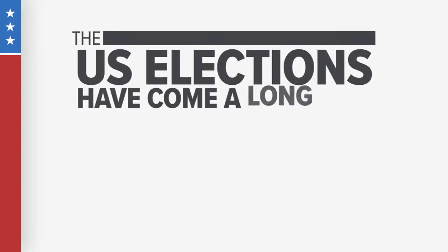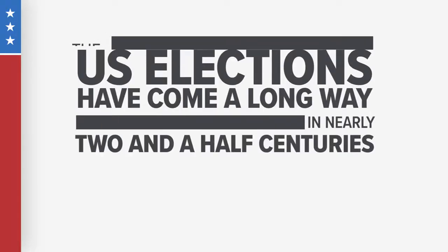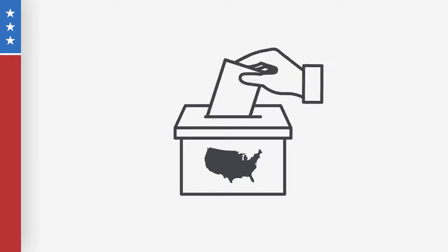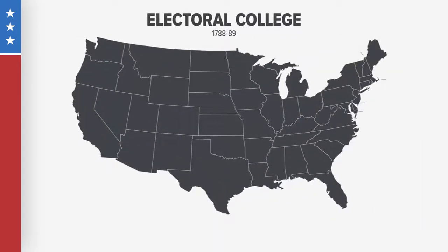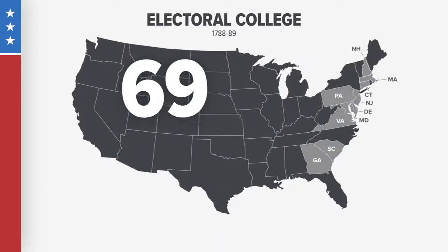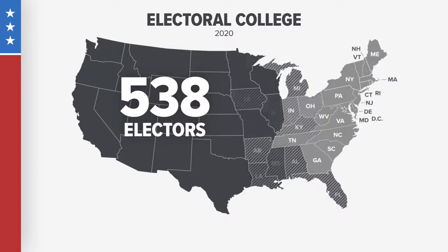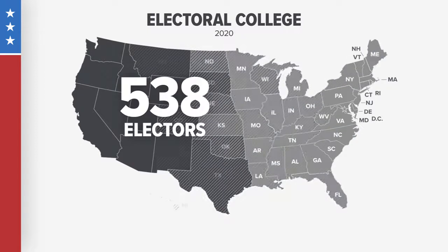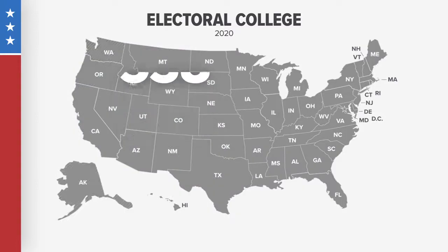The U.S. elections have come a long way in nearly two and a half centuries. It's hard to visualize the Electoral College initially made up of 10 states with only 69 electors total, now nearly eight times as large, with 538 electors across 50 states.